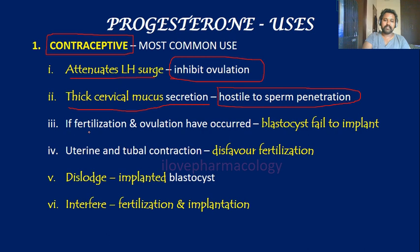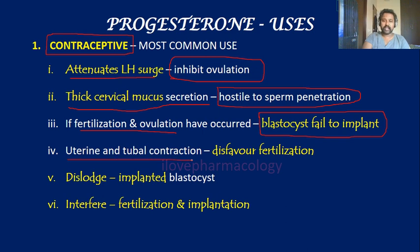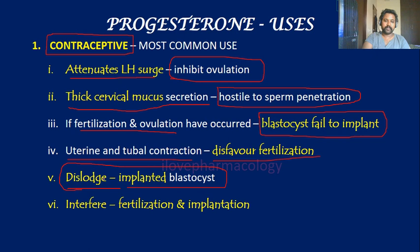If fertilization and ovulation have already occurred, progesterone will cause the blastocyst to fail to implant. It also brings about modifications in uterine as well as tubular contraction, thereby disfavouring fertilization, and can dislodge the implanted blastocyst and interfere with fertilization as well as implantation.